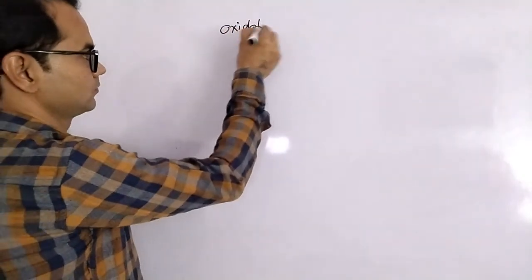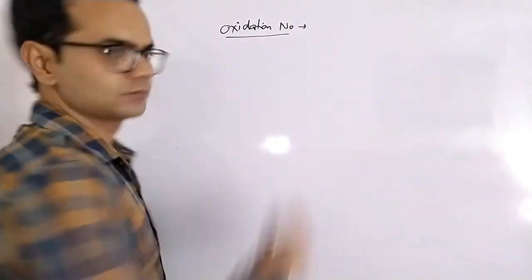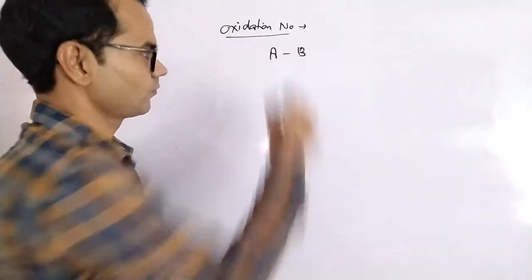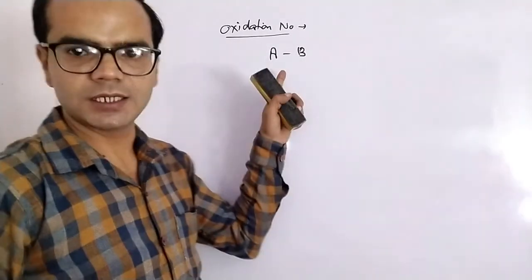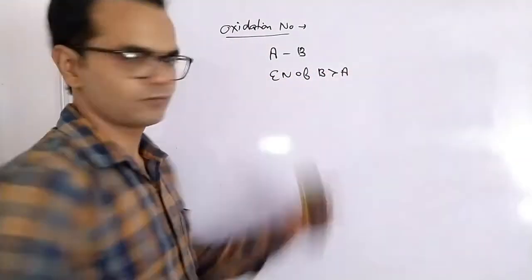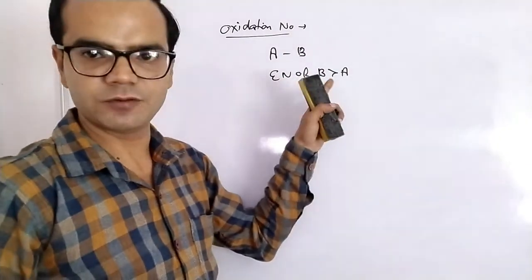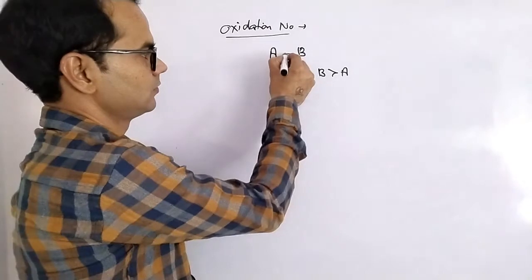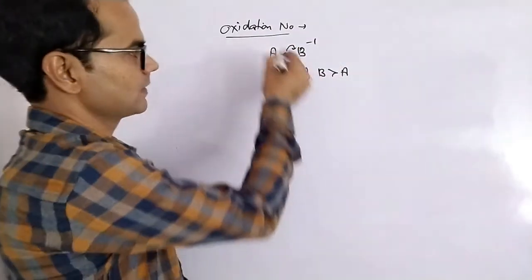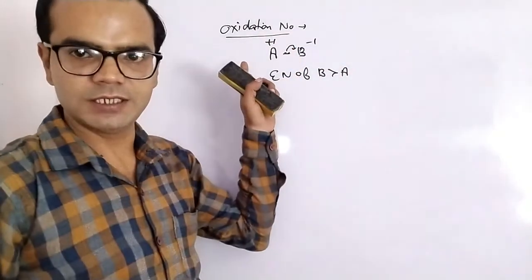Hello everyone and welcome back to my YouTube channel. Today we will discuss how to find out the oxidation number of compounds. For example, we have two atoms A and B with a single bond. If the electronegativity of B is higher than that of A, then B will attract this bond pair towards itself, so the charge on B is minus one and the charge on A is plus one.